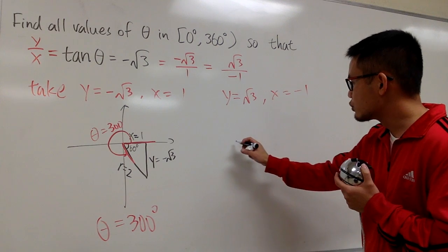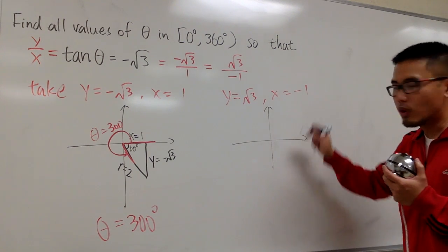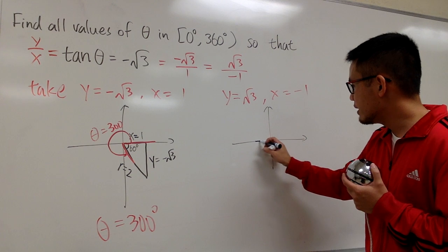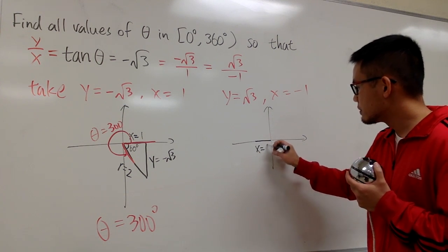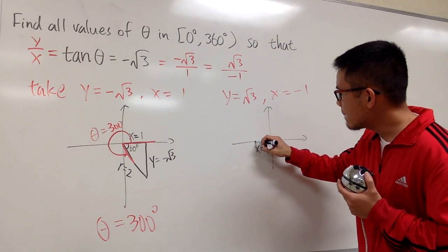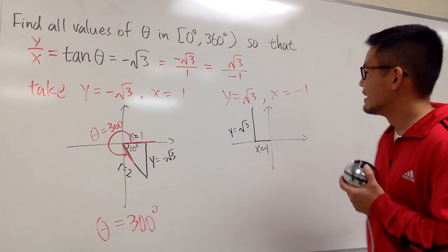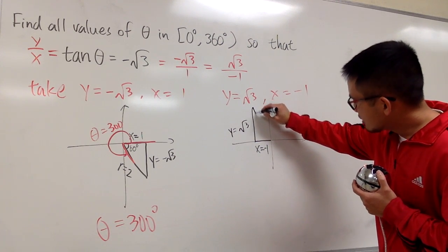Now, based on this, I will draw another picture. This time, x = -1, so that means I will go like this. Negative 1 right here. And y = √3, so it's going to be going up like this now. This is √3. And connect the dots right here.